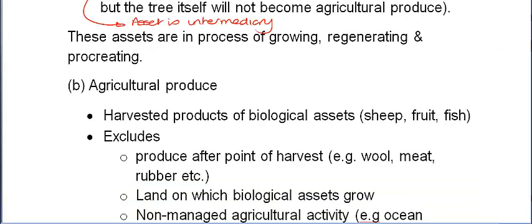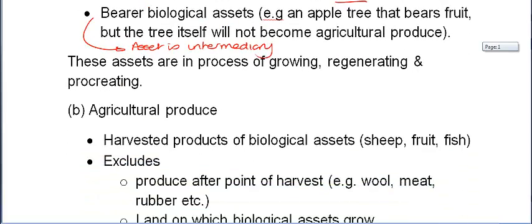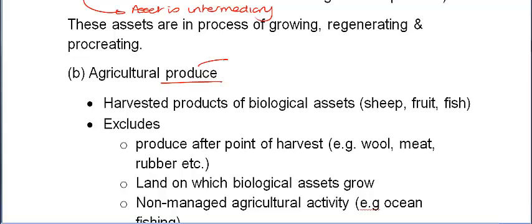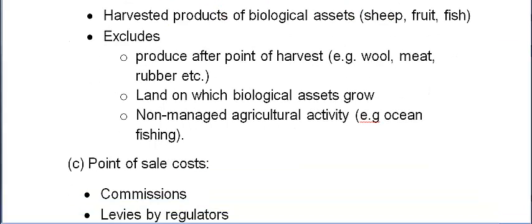These assets grow — they get bigger, bear fruit, grow more branches, and so on. We also have a second form: agricultural produce, which is the output. This includes harvested products such as sheep, fruit, and fish — things which we're going to sell in markets. Note that we exclude what happens to assets after the point of harvest, so we're not interested in the final processed product. The land on which assets grow is simply governed by IAS 16.